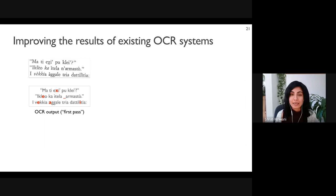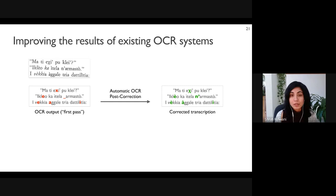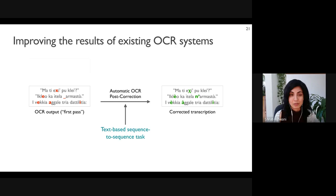Given the output from an existing OCR system on a scanned document, our previous analysis indicated we should expect some recognition errors. Post-correction takes this noisy first-pass transcription as input and fixes the recognition errors to produce a corrected transcription. Previous work has used post-correction to counteract the lack of training data for new fonts, layouts, and domains without retraining the system for each new distribution. In this talk, we develop post-correction methods for languages without enough data to train a high-performance OCR system.